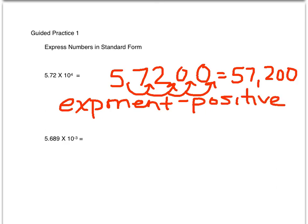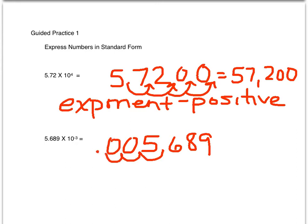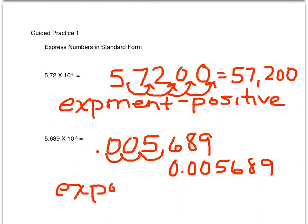In the next example, 5.689 times 10 to the negative third, we will move our decimal point to the left three places. So the answer will be 0.005689. We moved it to the left because the exponent is negative.